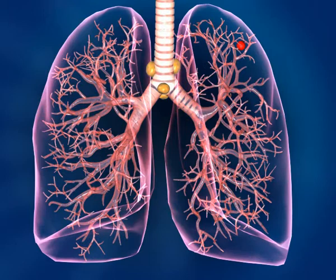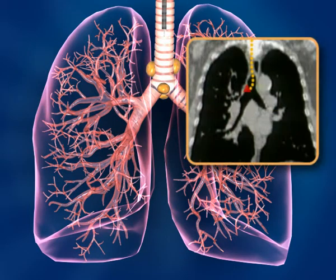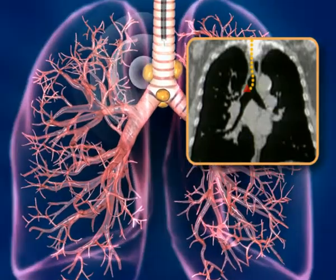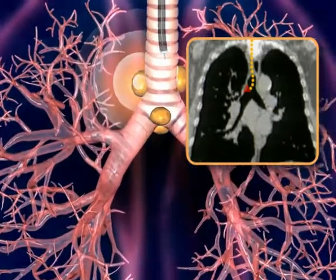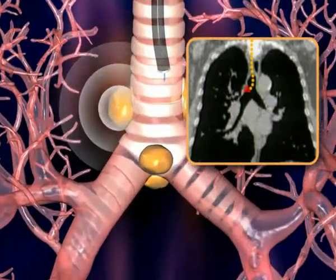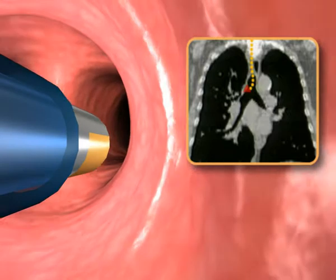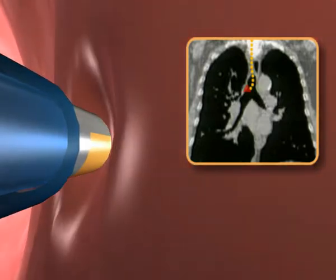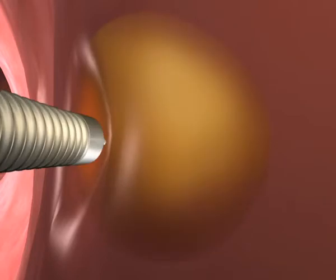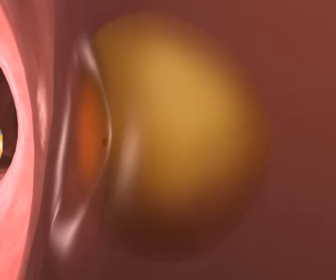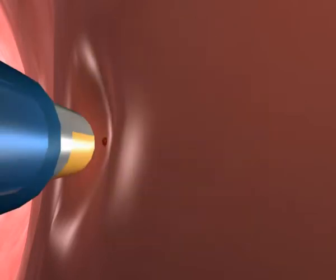To facilitate transbronchial needle aspiration of mediastinal lymph nodes, the physician positions the tip of the steerable navigation catheter or locatable guide via the CT images and creates a small dent at the lymph node entry point. The cytology or histology needle can then be inserted into the lymph node and sample collection completed.